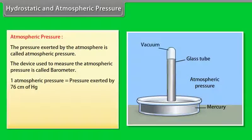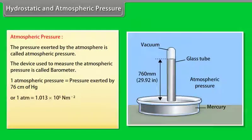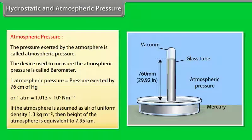One atmospheric pressure is equal to pressure exerted by 76 cm of mercury. Or, one atm is equal to 1.013 into 10 raised to the power 5 N/m². If the atmosphere is assumed as air of uniform density 1.3 kg/m³, then height of the atmosphere is equivalent to 7.95 kg/m³.